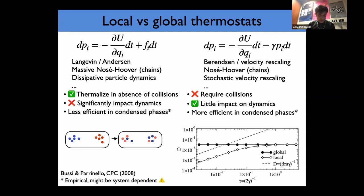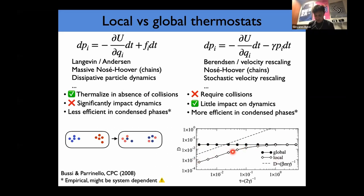There are also other differences. Importantly, the effect on dynamics of a global thermostat is much smaller than that of a local thermostat. This can be seen in a figure showing diffusion constant as a function of the control parameter tau: the diffusion coefficient is basically independent of the parameter choice for a global thermostat, whereas for a local thermostat, if you choose too high a friction, you end up with a very low diffusion constant. So dynamics is severely affected by local thermostats. In addition, it has been seen that global thermostats are much more efficient to equilibrate condensed phases.